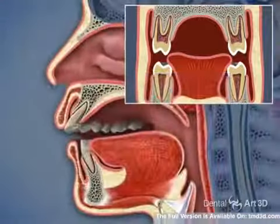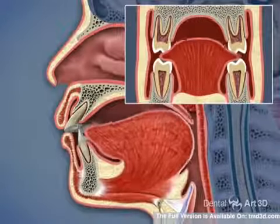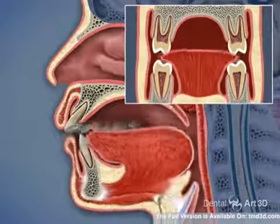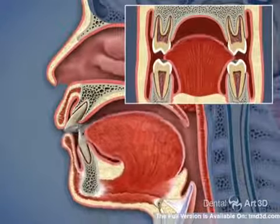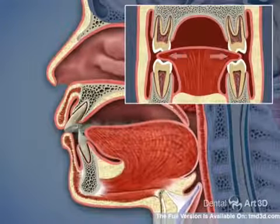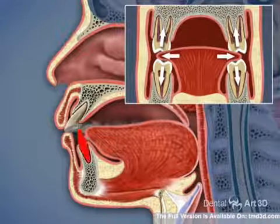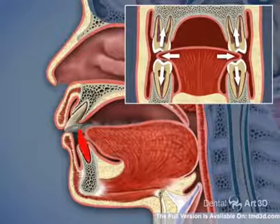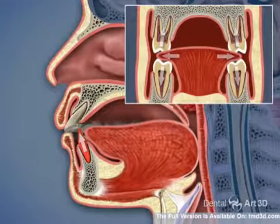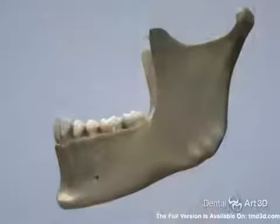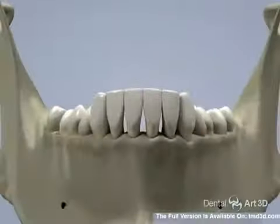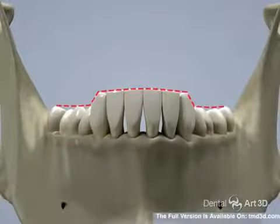This also produces an incorrect swallowing function. Upon swallowing, the tongue rests on the lateral teeth, hindering normal tooth eruption, causing a lateral tongue thrust. A constantly open mouth causes the incisors to over-erupt.